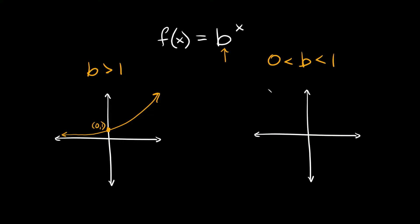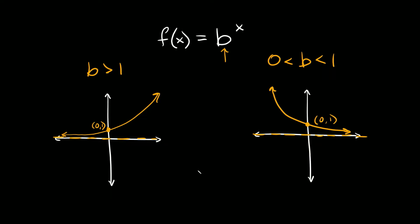Decay slopes downward, so that's exactly what that graph does — it slopes down like that. Both graphs go through the same point at (0, 1), and both have an asymptote on the x-axis, meaning neither graph ever touches the x-axis. It gets really close but never actually touches.